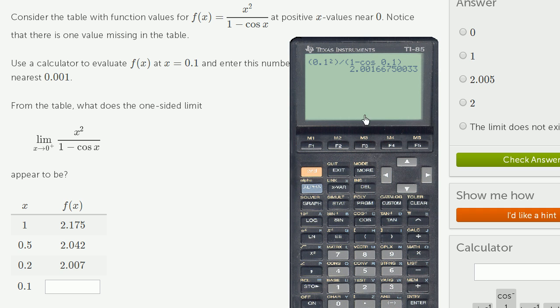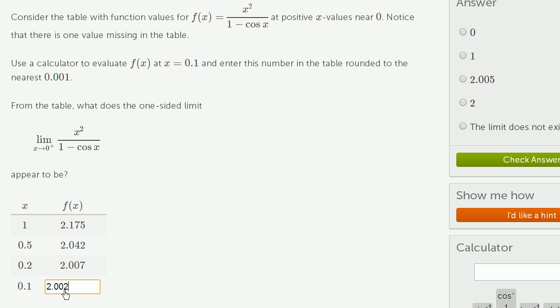And this gets me 2.0016. And they want us to round to the nearest thousandth, so that would be 2.002. Type that in, 2.002.